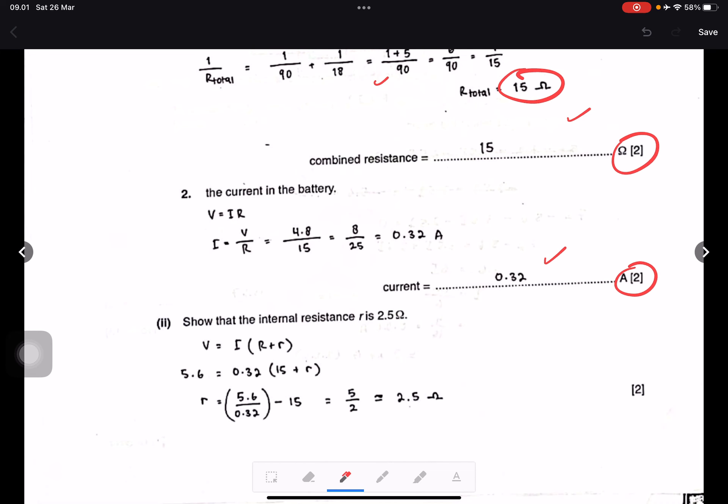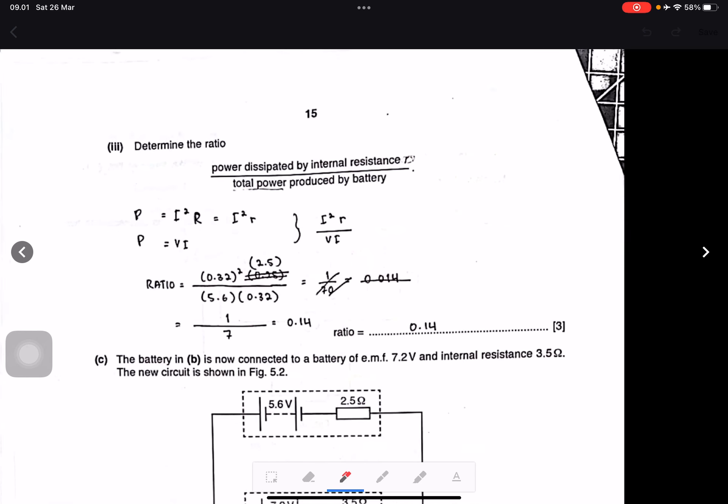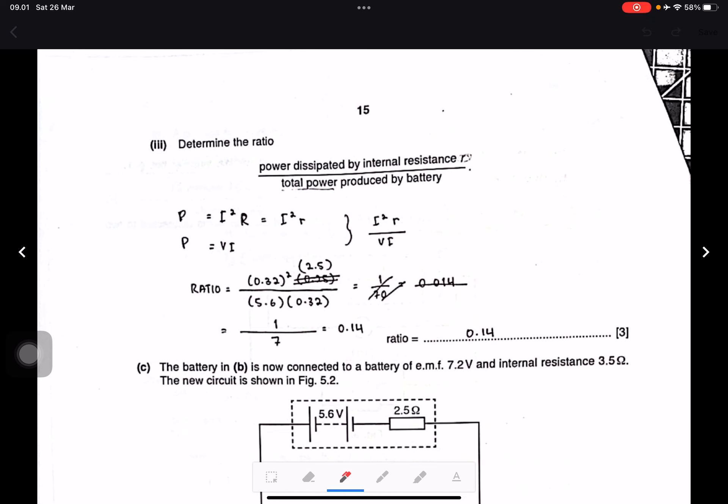Question ii: Show the internal resistance r is 2.5 ohms. Yes, this is correct. EMF equals 5.6 equals 4.8 plus 0.32 times R. So r equals 2.5 ohms. Determine the ratio of power dissipated by internal resistor r to total power produced by battery. Power dissipated is I squared r, power from battery is EMF times I. The ratio is 1 divided by 7 equals 0.14. Yes.